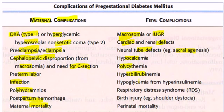Hypoglycemia due to hyperinsulinemia — high insulin in the blood can lead to hypoglycemia. Respiratory distress syndrome, birth injuries such as shoulder dystocia, and perinatal mortality, similar to maternal mortality. Thank you.